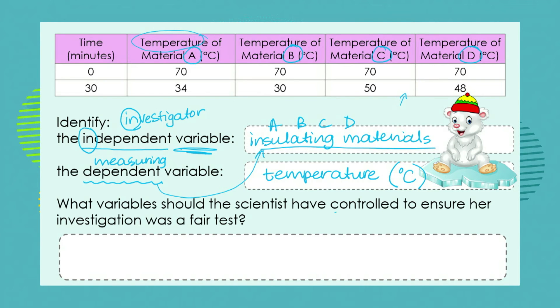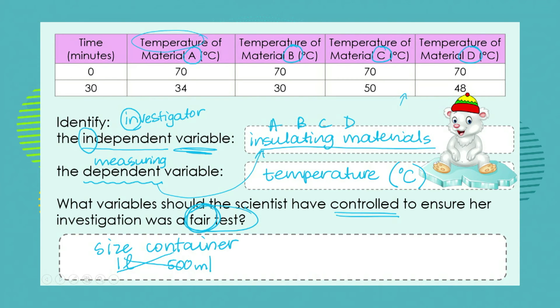What variables should she have controlled to ensure a fair, valid, and reliable test? First, the size of the container — she can't have one container with one litre of water and another with 500 millilitres; that would not make it a fair test. She also made sure the starting temperature in each case was the same. And she would have made sure that the thickness of her insulating material was also the same, because the thickness of an insulator affects its success as an insulating material.